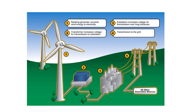The wind turbine is connected to the grid via an intermediate direct current circuit. The alternating current generated by the generator is first converted into direct current and then converted back into alternating current with the correct frequency and voltage. This enables variable speed operation of the wind turbine and minimizes mechanical stresses. The rotating generator converts wind energy to electricity, and the transformer increases voltage for transmission to the substation. The substation increases voltage further for transmission over long distances and to the grid.